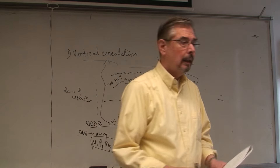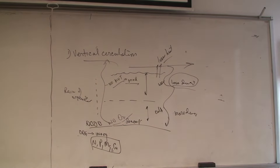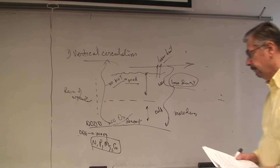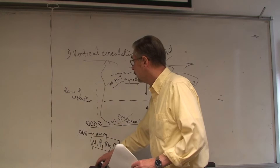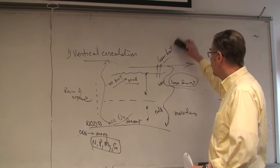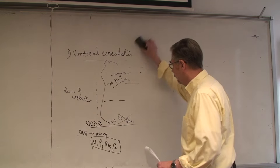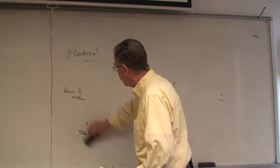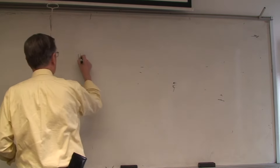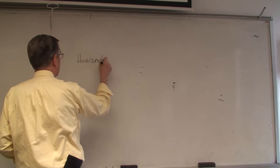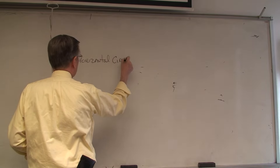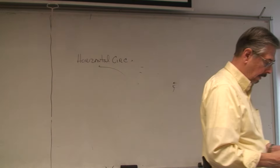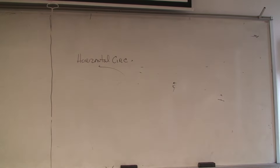That tells you about the importance of vertical circulation. Now, how about the importance of horizontal circulation? Horizontal circulation is very important for the distribution and transport of organisms in the ocean.